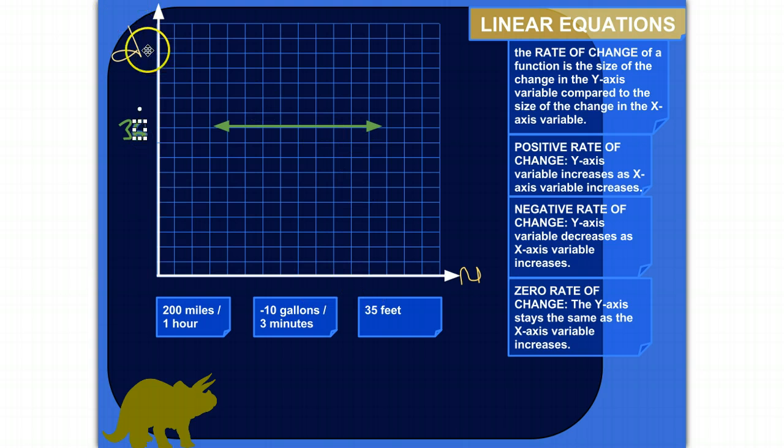If the distance between those buildings is always 35 feet, no matter if you're talking about a minute from now, or 300 minutes from now, or 3 billion minutes from now, then there's no rate of change there. The distance is always 35. And so the y's stay the same as the x's increase.